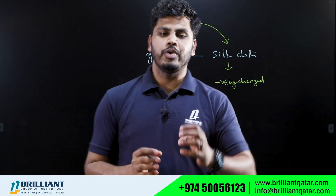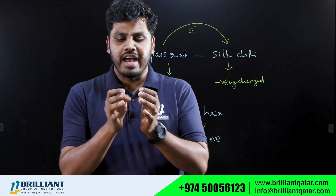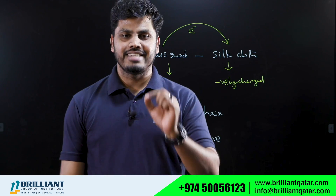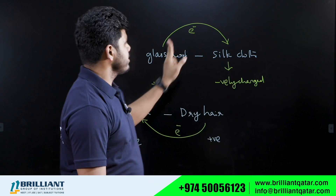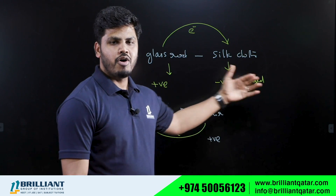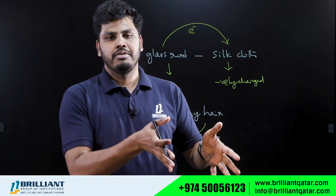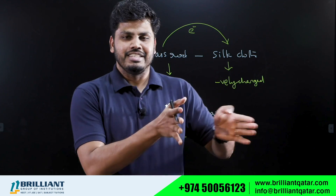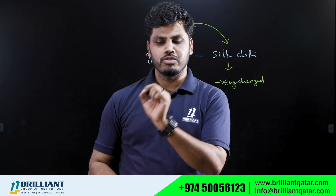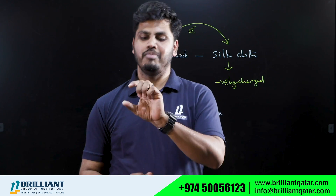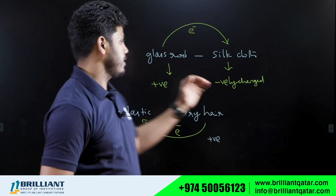This is how you charge a body by rubbing it against another, and this process is called static electricity. It is called static electricity because electrons, once transferred, cannot move back to the other body or move freely within the material. Electricity — or current electricity — is the term for moving charges. This is called static electricity because these electrons are stationary.